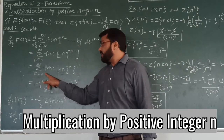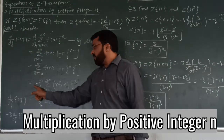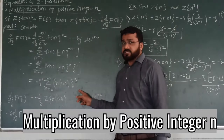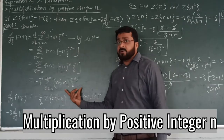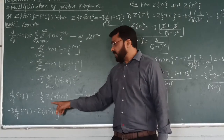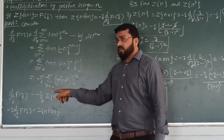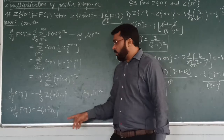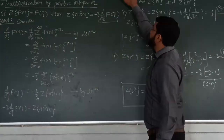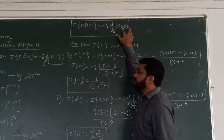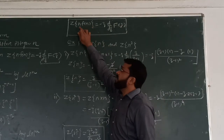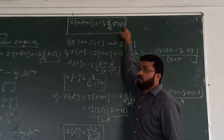The summation is dependent over N, so the independent terms can be factored out. We factor out minus Z to the power minus 1, and the remaining summation is N·F(N)·Z to the power minus N. This summation is nothing but the Z-transformation of N·F(N) by definition. So transferring the minus Z to the other side, we get the Z-transformation of N·F(n) equals minus Z times d/dZ of F(Z), which is what was required to prove.